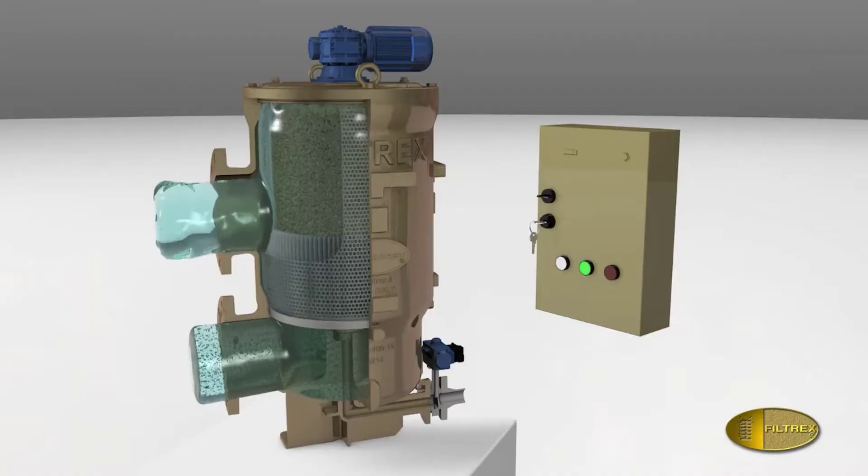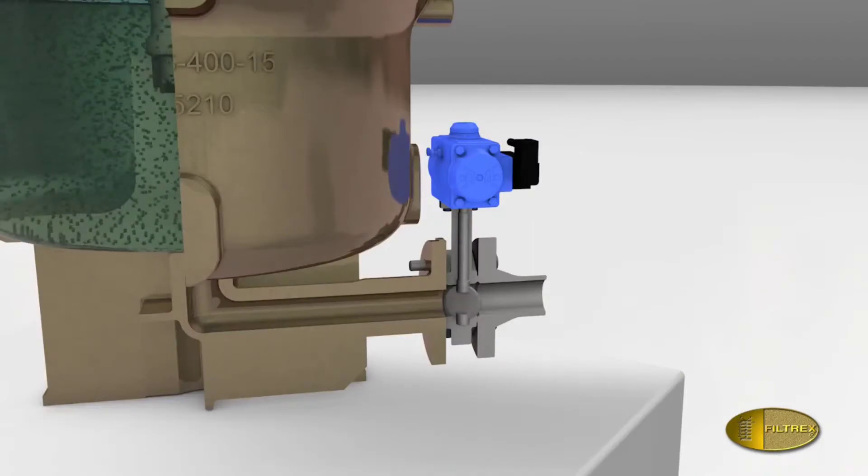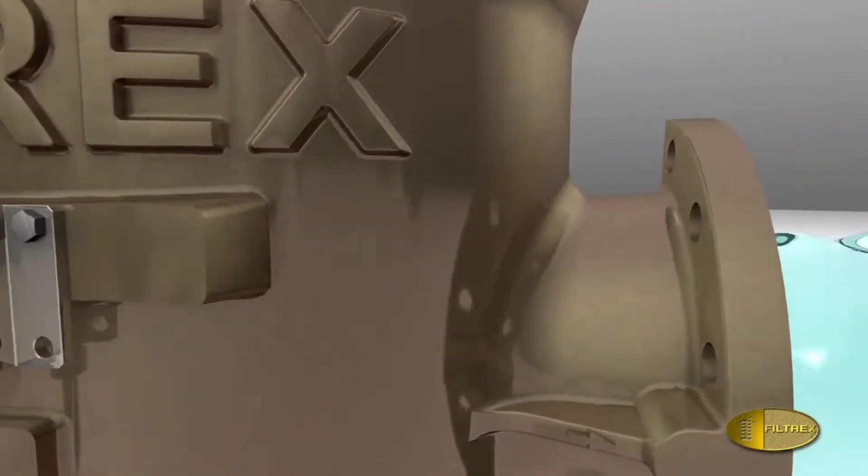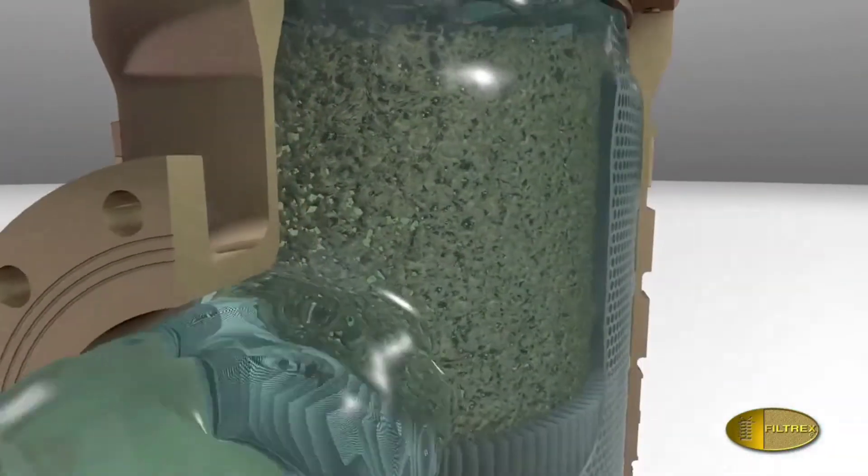Through the control panel, the electric motor is activated, then the backwash valve is opened, starting the rotation of the cleaning nozzle and the cleaning phase.